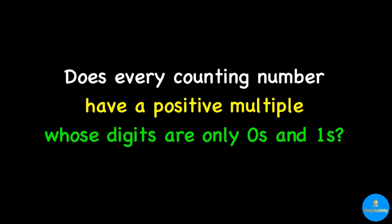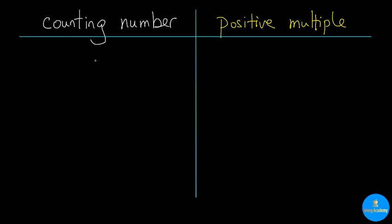Does every counting number have a positive multiple whose digits are only zeros and ones? To ensure that we are all on the same page, let's go over some simple examples.